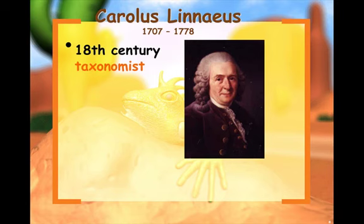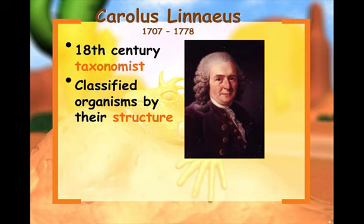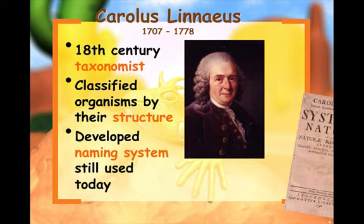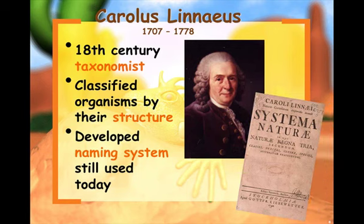Carolus Linnaeus is called the father of classification. He was an 18th century taxonomist who classified organisms by their structures and developed the naming system we still use today, called binomial nomenclature. His key document was the Systema Naturae.